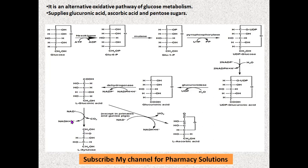L-gluconic acid is also converted to L-ascorbic acid on dehydrogenation — except in primates and guinea pigs, this synthesis takes place. A water molecule is removed from the structure in this conversion.